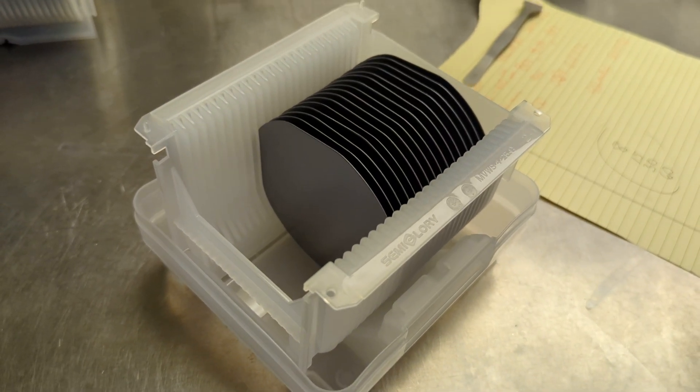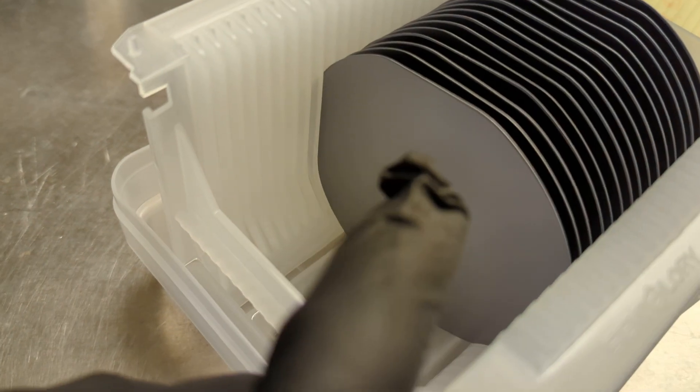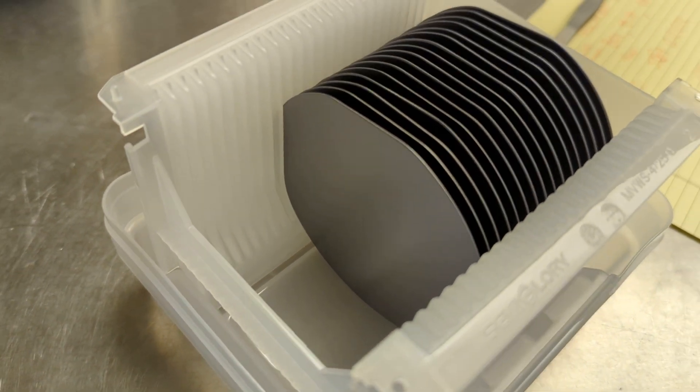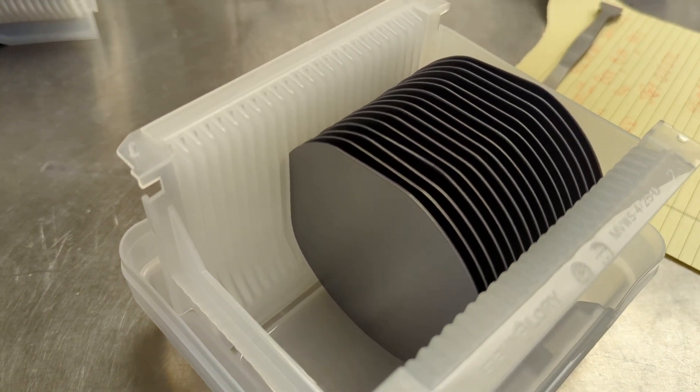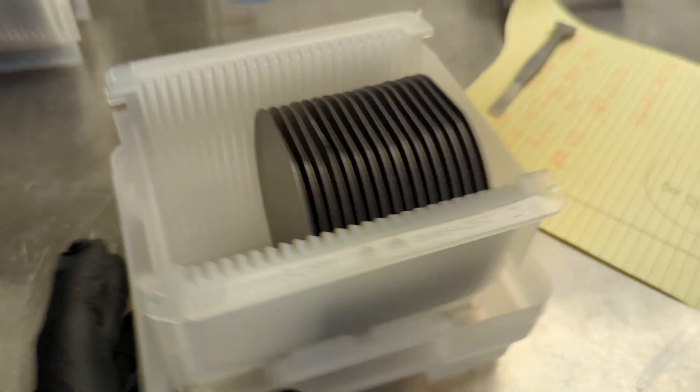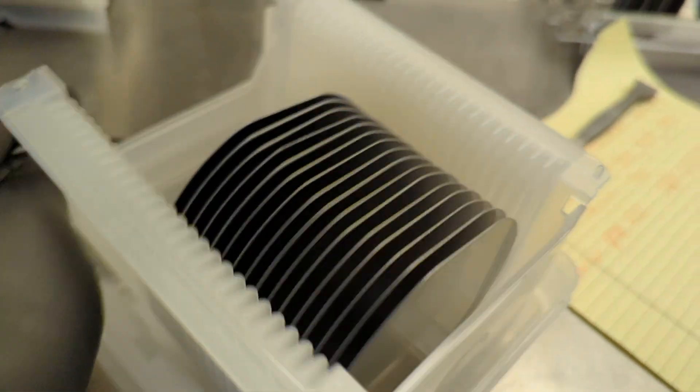Here's some silicon wafers that are fresh. You can see that this side is dull. The dull side will face this way and this will go into the furnace. That's the shiny side.